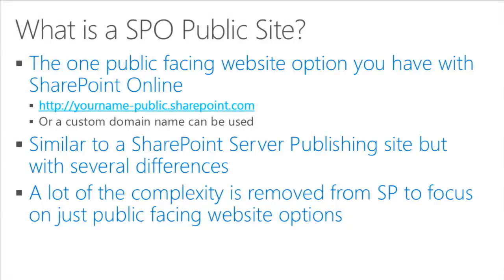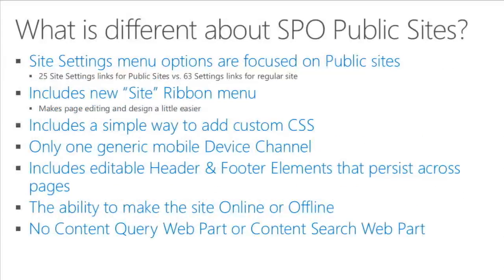The site settings menu options are focused on public sites — there are only about 25 options in the menu versus 63 in a regular intranet site. There's also a Site tab on the ribbon, which is mostly shortcuts to things you could already do, but it helps you work with a public-facing website a little easier than the regular editing menus that come with SharePoint on-prem.